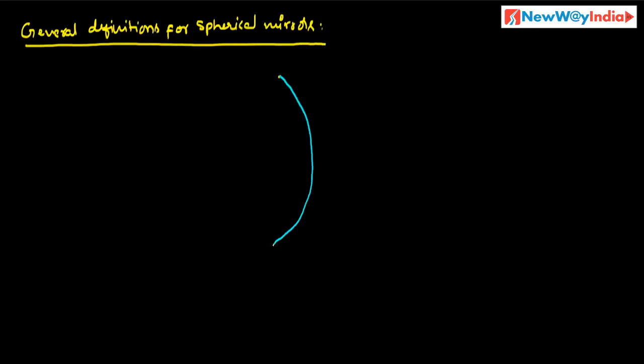Welcome to the session. In this session we will discuss general definitions for spherical mirrors. Consider a spherical mirror — the outward surface is coated with some color, and the inward surface is the reflecting surface, which is the polished surface.